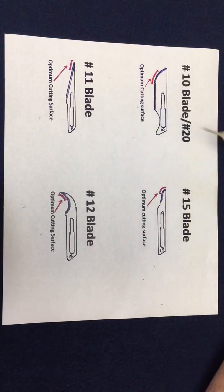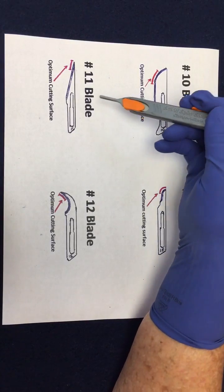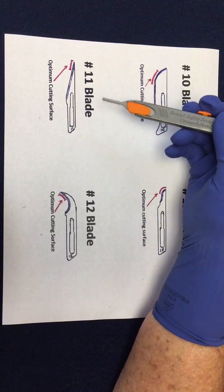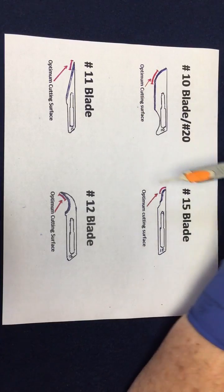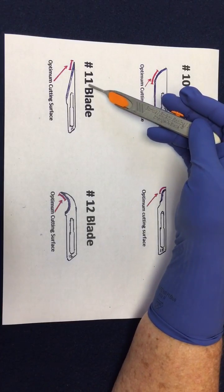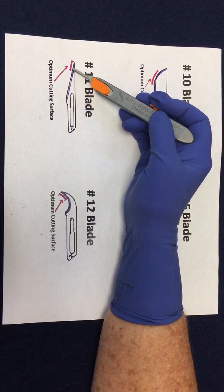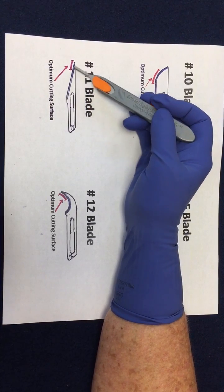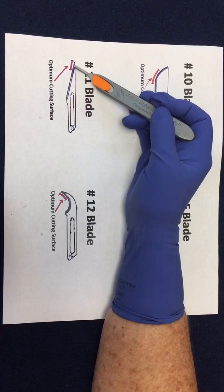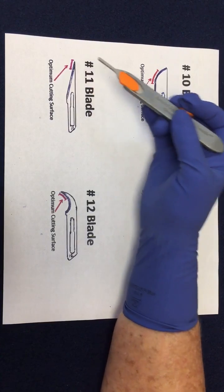Then you have the 11 blade, which is good for when you want to puncture something — like making an I&D, you're going to want to lance it. Some surgeons will also use this for smaller incisions; I have surgeons who use a 15 for trocar sites and others who use an 11. With the 11, use the lance — you wouldn't want to use the full blade because it's too sharp and you might cut something you didn't want to cut.